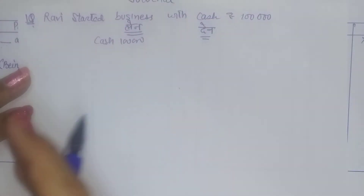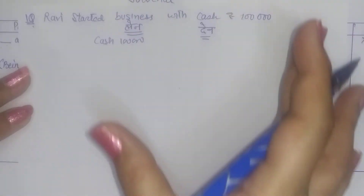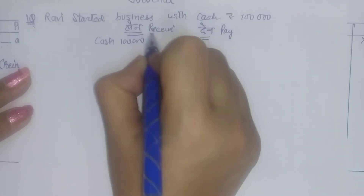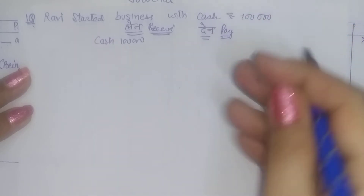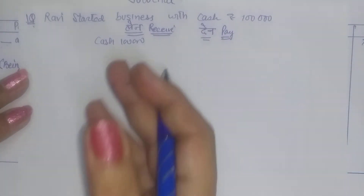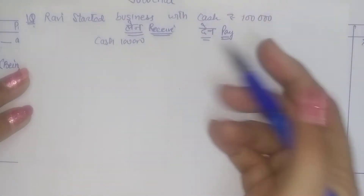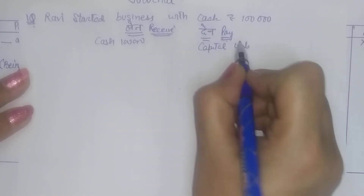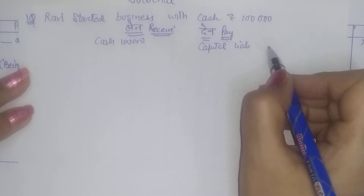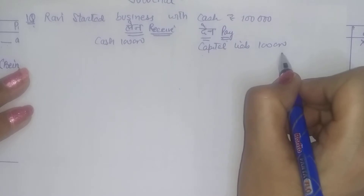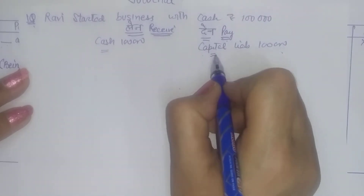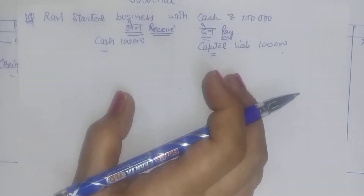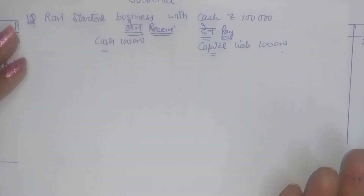Capital is also a liability, but it is an internal one — so we write it simply as capital. So a liability, capital, has been created. The two effects are: cash and capital. Now think about debit and credit. In traditional classification, accounts are classified as real, personal, or nominal. Cash is a real account. Capital is a personal account because it is a person's account — whichever accounts belong to a person are personal accounts.